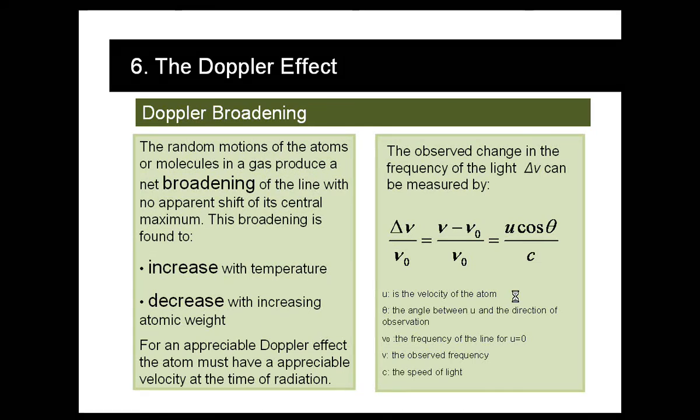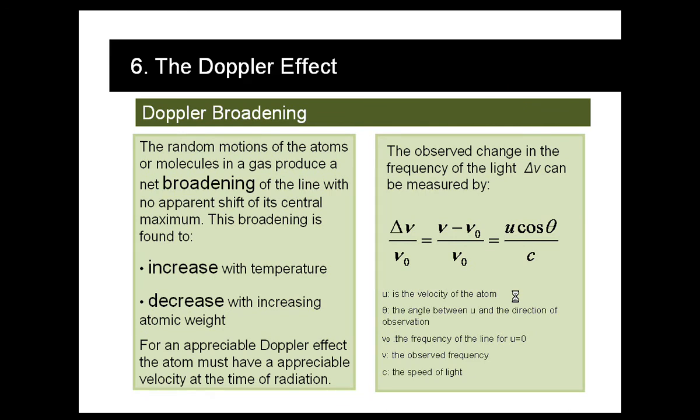We can calculate the difference between the frequency that we observe and the frequency of the line if our material didn't move, and it is given by this formula where theta is the angle between the direction of observation and the velocity of our material.